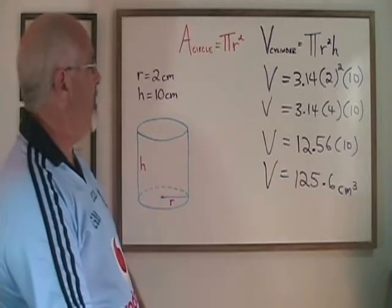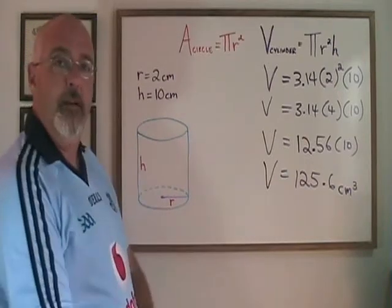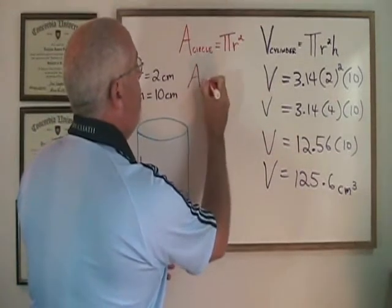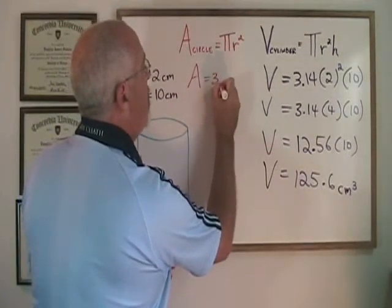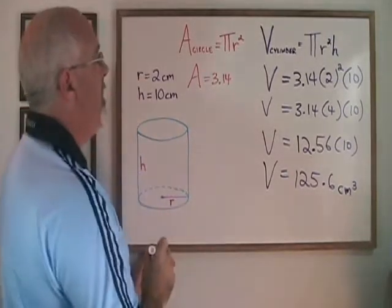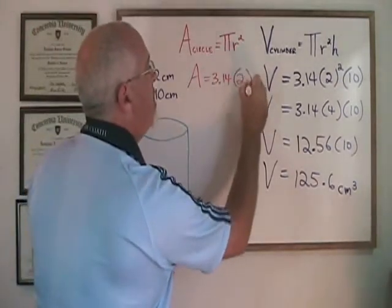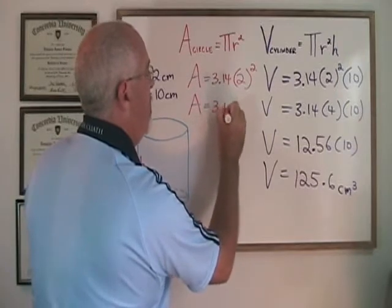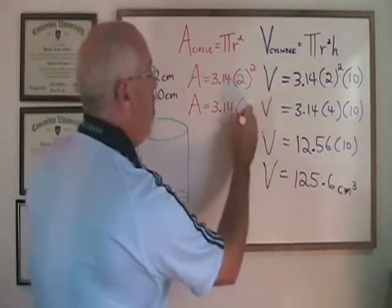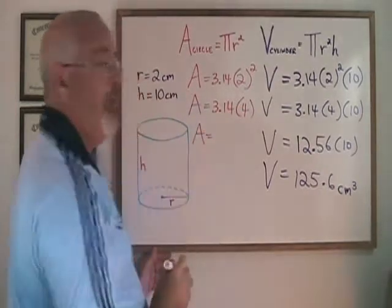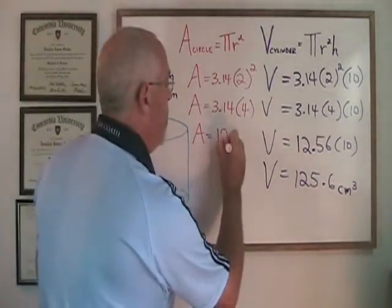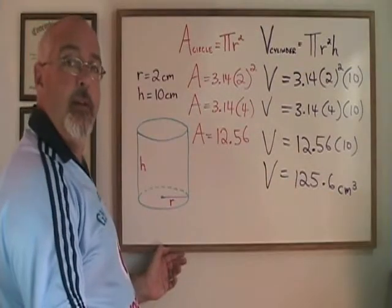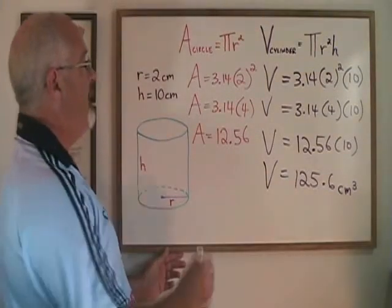Let's find the area of the circle at the bottom of this cylinder. The radius is still 2, so the area formula becomes A equals 3.14 for pi times the radius 2 squared. 2 squared is 4 and 4 times 3.14 is 12.56. The unit for area will be centimeters squared.